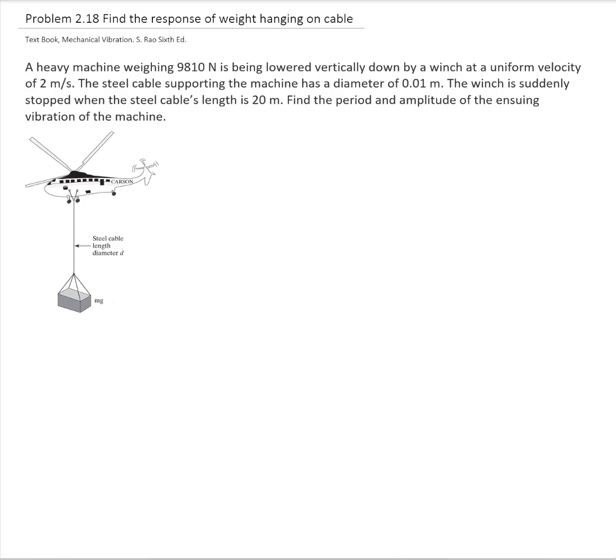This is problem 2.18 of the textbook Mechanical Vibrations from Singiresu Rao 6th edition. A heavy machine weighing 9,810 N is being lowered vertically down by a winch at a uniform velocity of 2 m per second.